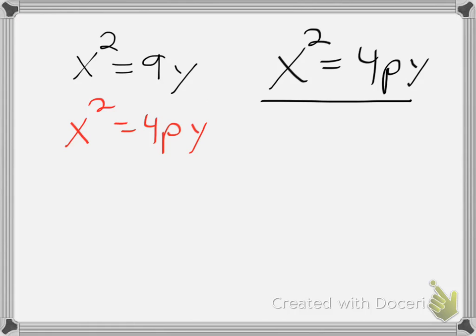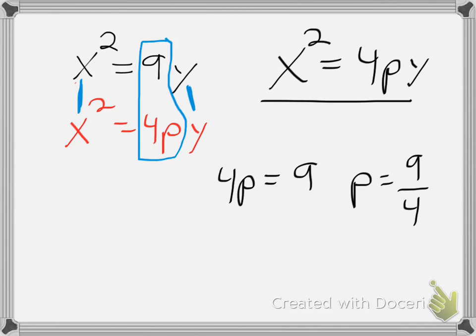As I said, I'm going to match it up. So, my x squareds match up, and my y's match up. Which means my 9 and 4p are also going to match up. In other words, I can make an equation based on that. This implies that 4p is equivalent to 9. And by solving the equation, we find our p-value is 9 over 4.